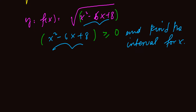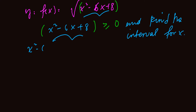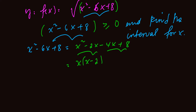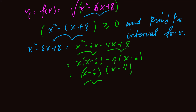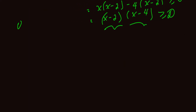We use the factorization method to solve x squared minus 6x plus 8. We find two numbers alpha and beta where the sum is minus 6 and the product is 8. These numbers are minus 2 and minus 4. So we write x squared minus 2x minus 4x plus 8, giving the factored form x minus 2 times x minus 4. So we need the product x minus 2 times x minus 4 to be greater or equal to 0.